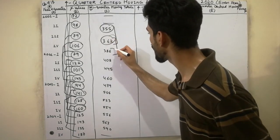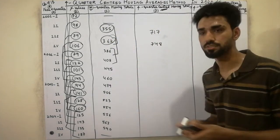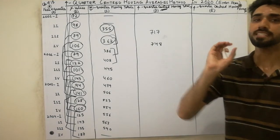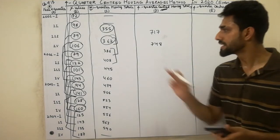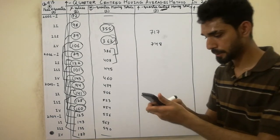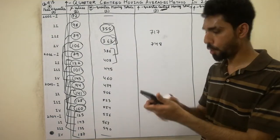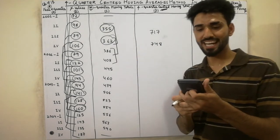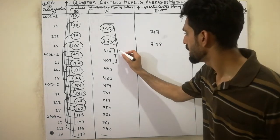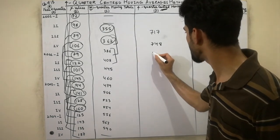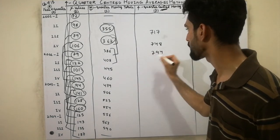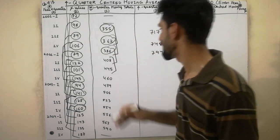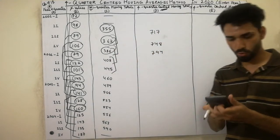We leave that value and add the next two centered values again. We continue this process — adding each consecutive pair of four-quarter moving totals to get the centered moving total for each row.